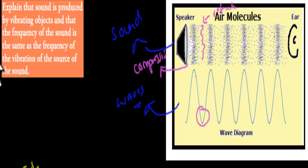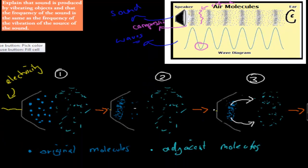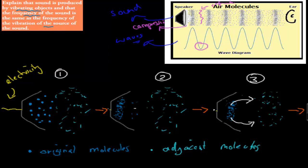But we still have to talk about how these different things actually happen — how compressions and rarefactions actually occur, what makes them happen. That's what we're going to talk about now: the production of sound, and how that is linked to vibrating objects. Let's say this is a speaker — in this example on top, we have a speaker.